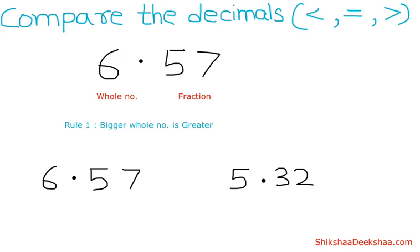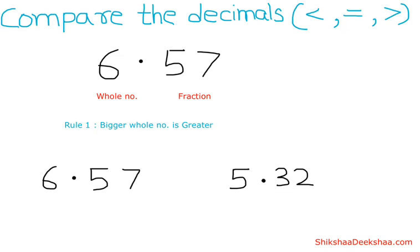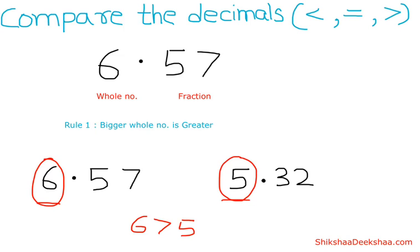So let's compare 6.57 and 5.32. In this number we have 6, and here we have 5. Since 6 is greater than 5 — we are comparing only the whole numbers — 6.57 is greater than 5.32.